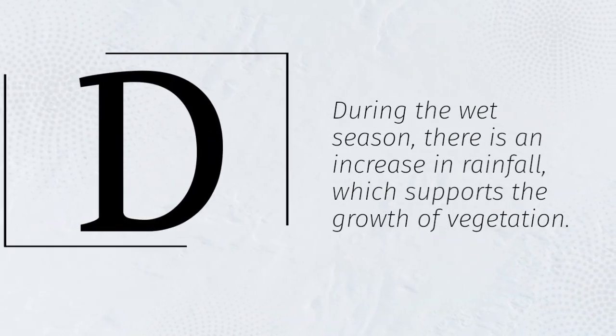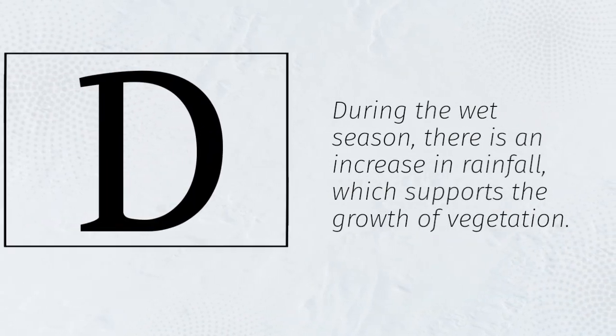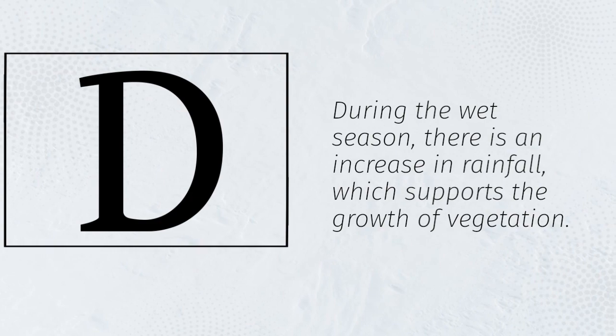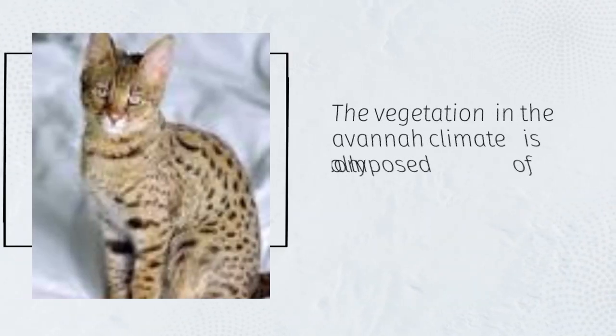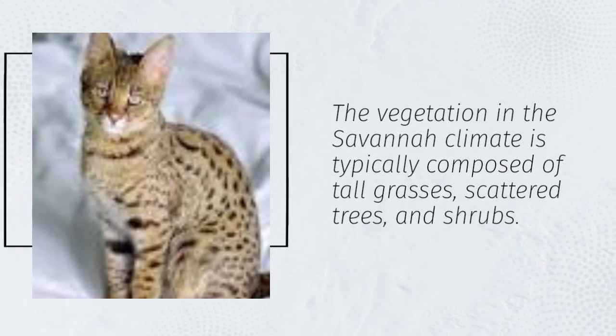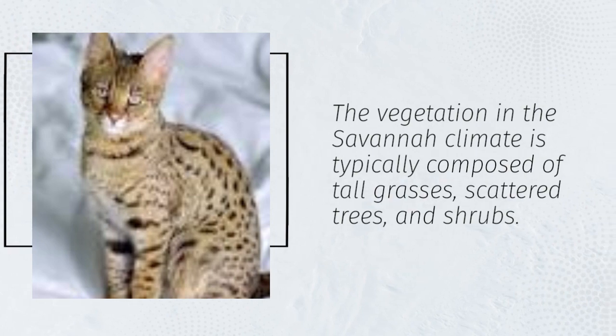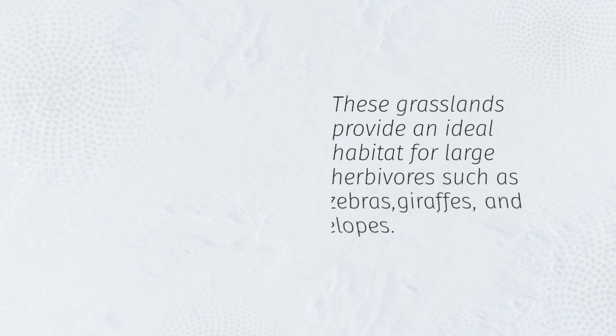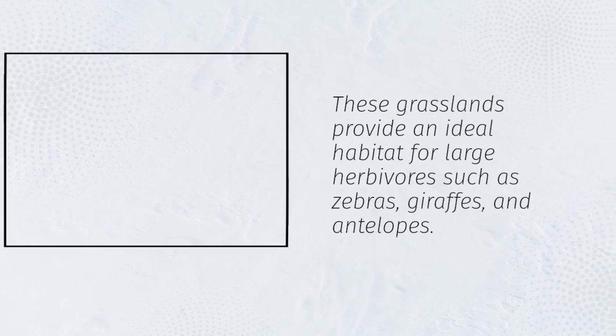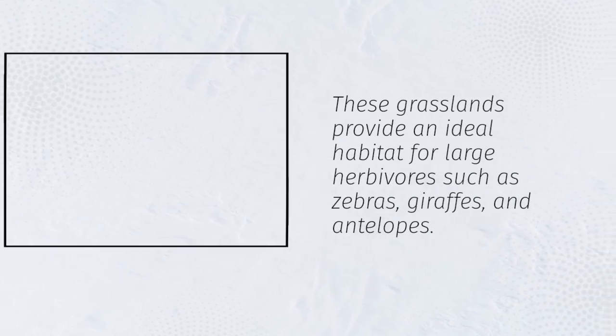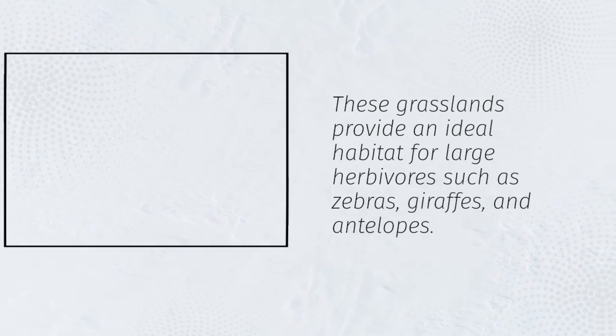During the wet season, there is an increase in rainfall, which supports the growth of vegetation. The vegetation in the Savannah climate is typically composed of tall grasses, scattered trees, and shrubs. These grasslands provide an ideal habitat for large herbivores such as zebras, giraffes, and antelopes.